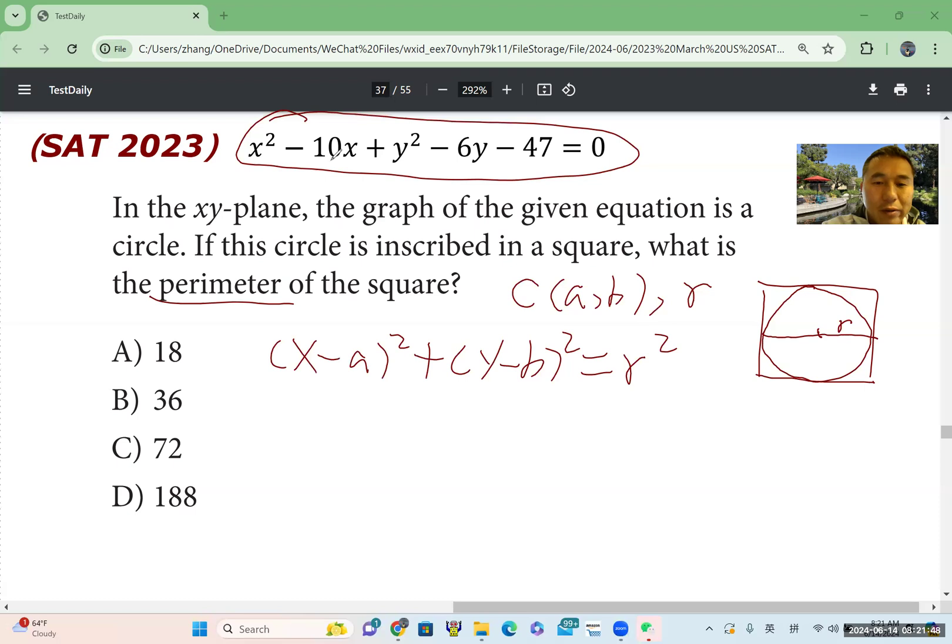So we have x minus a, a should be half of negative 10. That being said, (x - 5)² plus y minus b. Here, b should be half of 6, so (y - 3)². We move negative 47 to the right side. So we get 47.